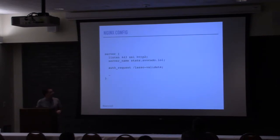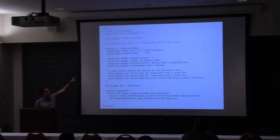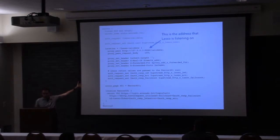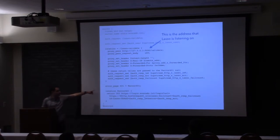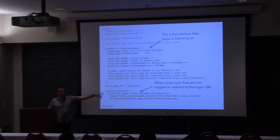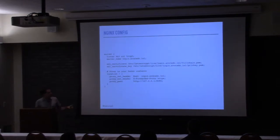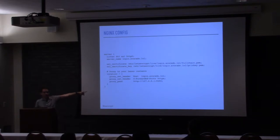To set this up, we take our normal stats.avocado.lol server block and add the auth_request line to it. That tells it to send the sub-request to a specific path. That path is handled by a middle chunk that proxies the request back to the Go microservice, which is listening on localhost port 9090. When the user is not logged in, that service returns 401, and we redirect the user to the login page. We also need a new server block for the hostname login.avocado.lol, which basically just proxies to the Go microservice so it has a public hostname that can be visited in a browser.